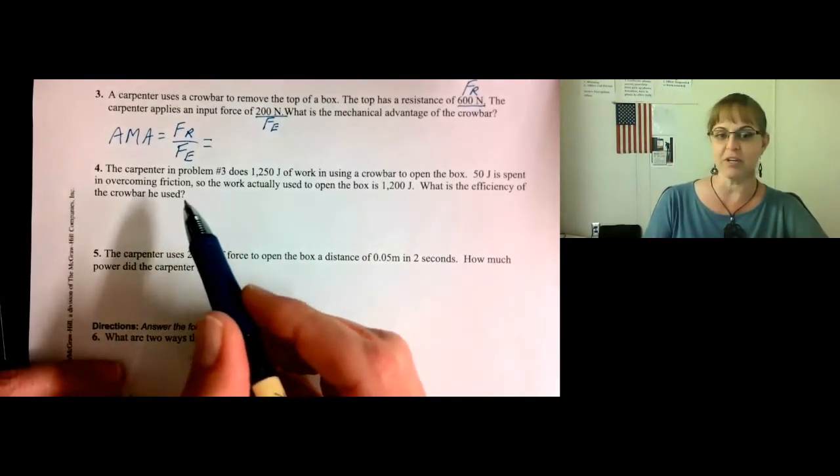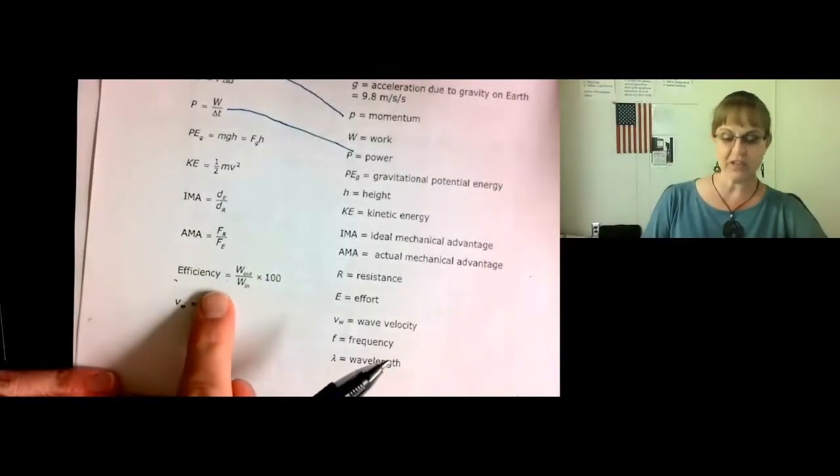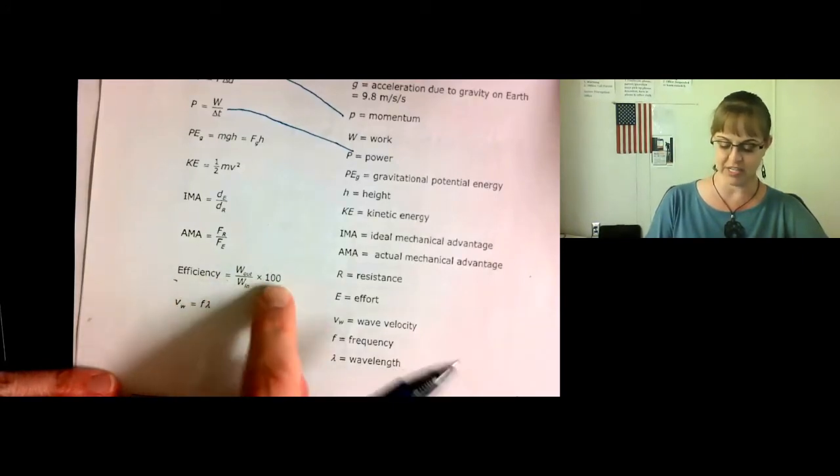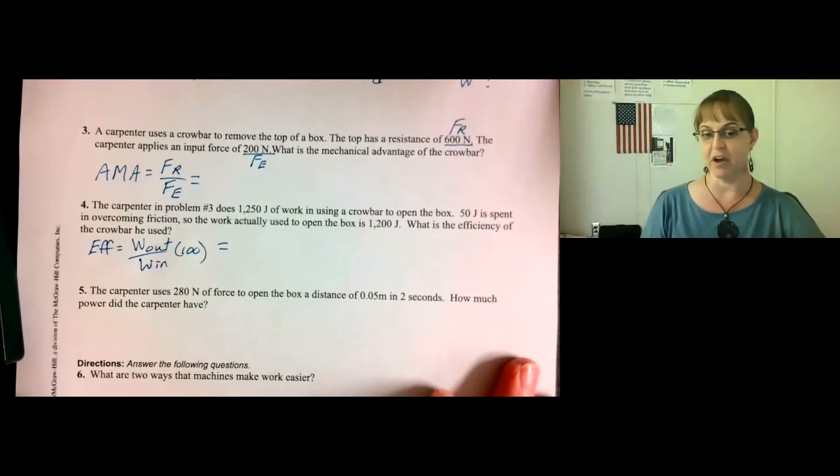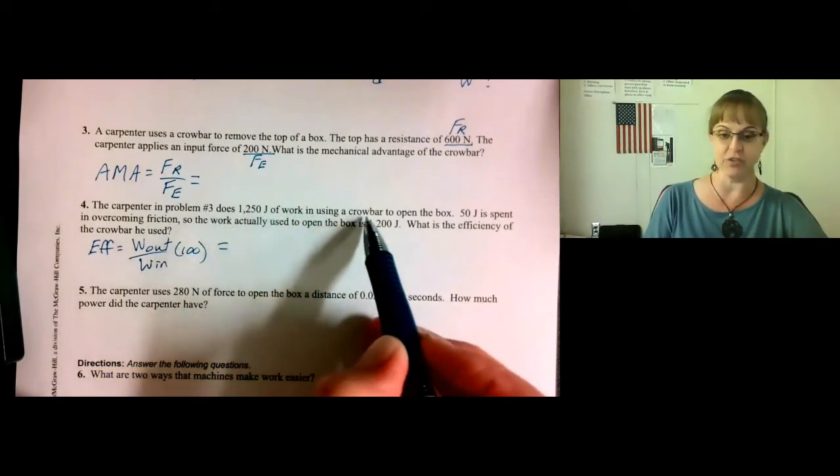Number four. The carpenter in problem number three does 1,250 joules of work in using a crowbar to open the box. 50 joules is spent in overcoming friction. So the work actually used to open the box is 1,200 joules. What is the efficiency of the crowbar he used? The formula for efficiency is found here on your reference table. It is the work output over the work input times 100.